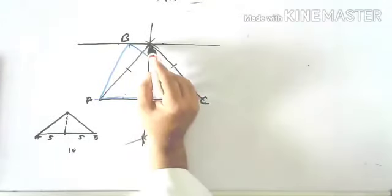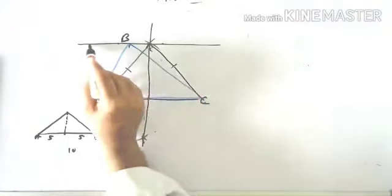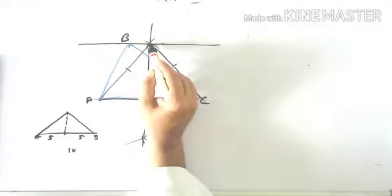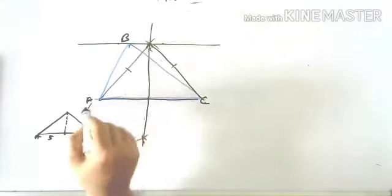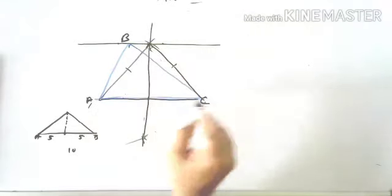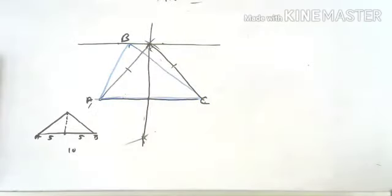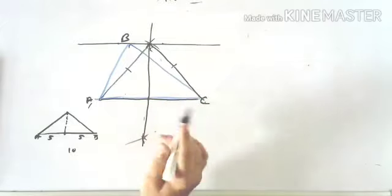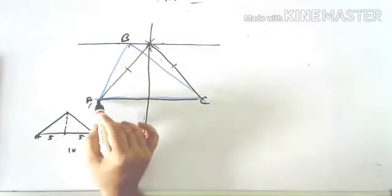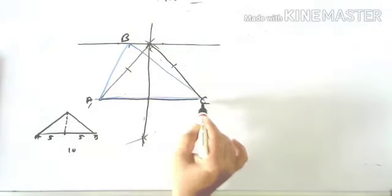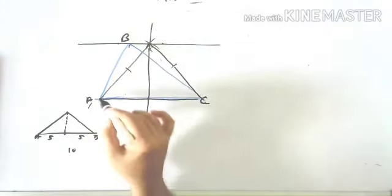A-B-C. So this is a triangle — it's forming a triangle there.